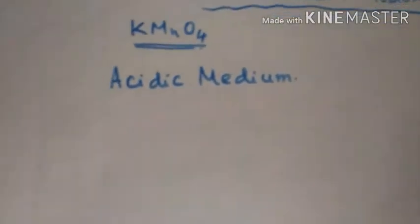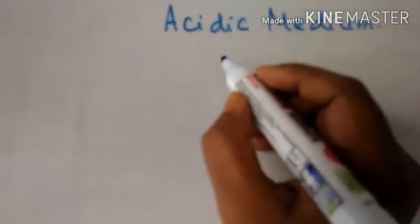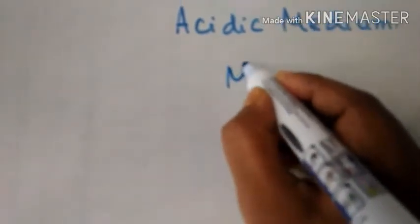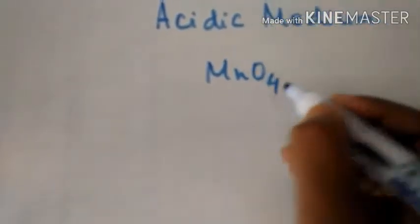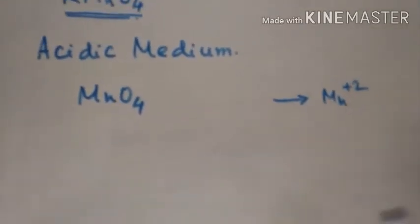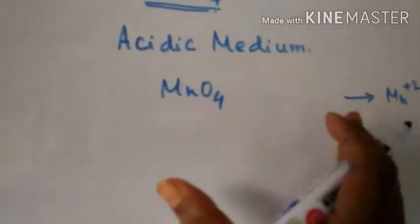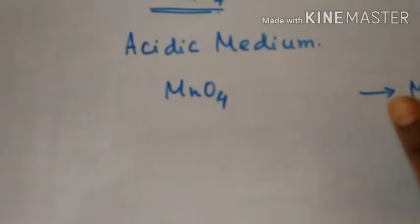In acidic medium, potassium permanganate reacts in this way. Manganate transforms into Mn²⁺ in acidic medium. I have already given some videos on this type of reaction using the ion-electron method.